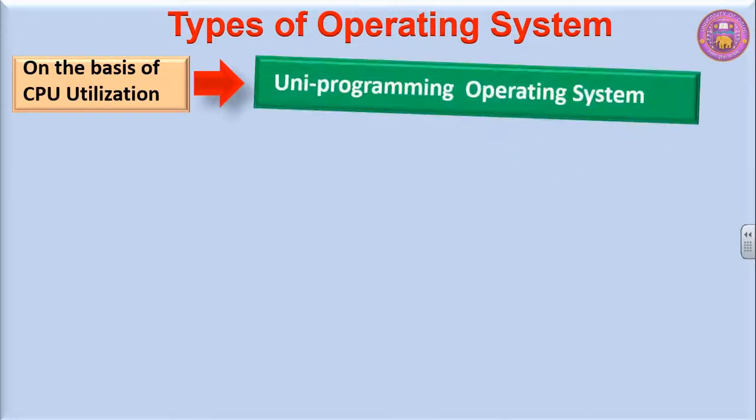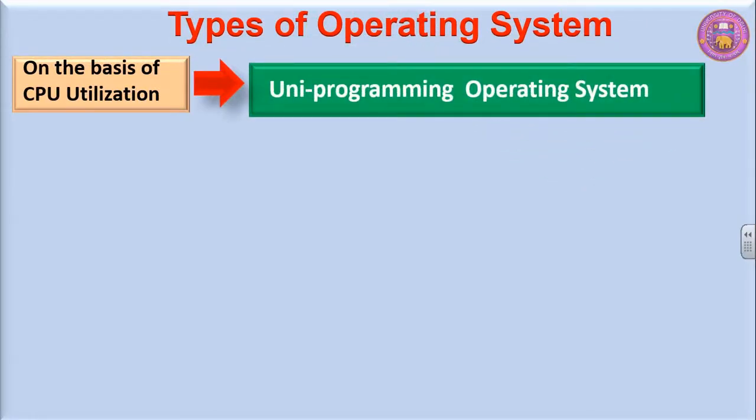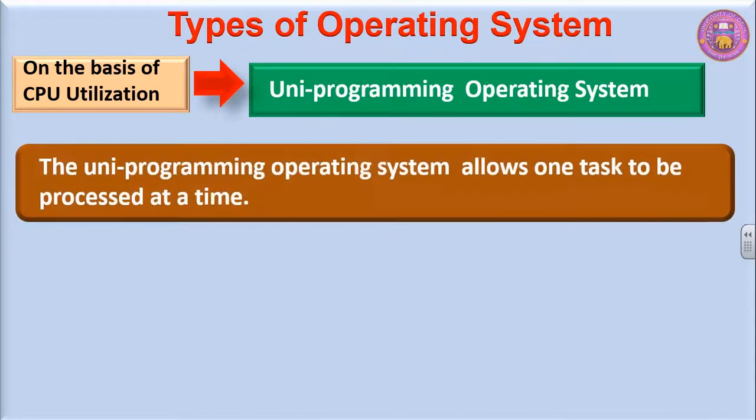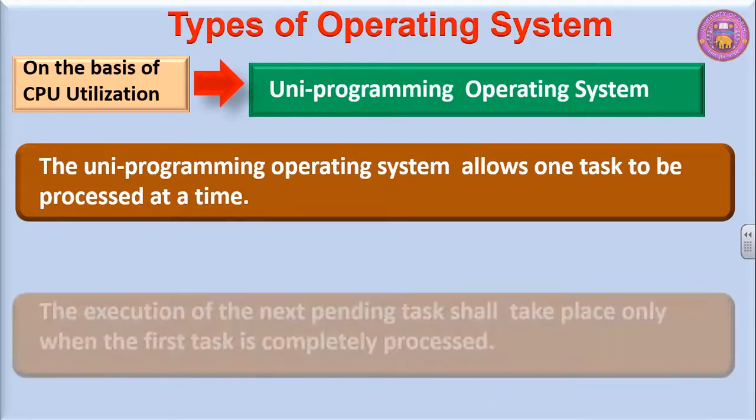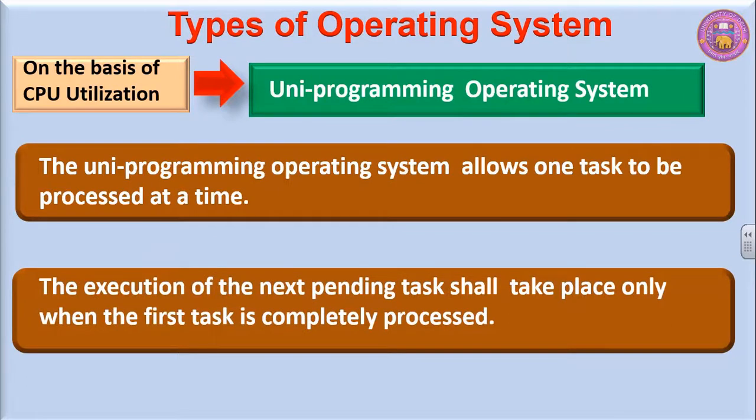The next one on the basis of CPU utilization is uni-programming operating system. The uni-programming operating system allows one task to be processed at a time. The execution of the next pending task shall take place only when the first task is completely processed.